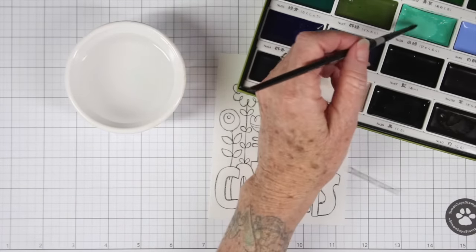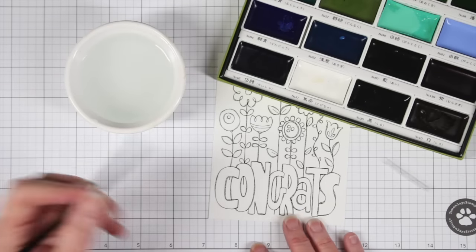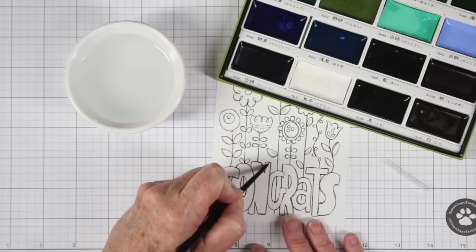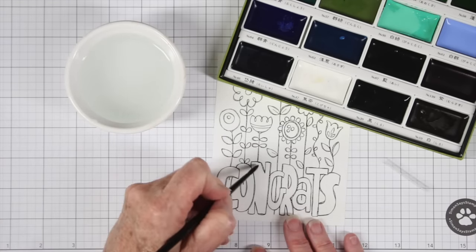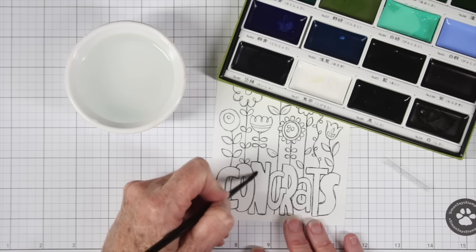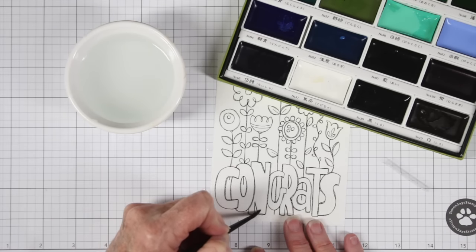The next thing I learned to do is take a clean paintbrush and wet down the area I'm going to be painting. I'm just going to run my paintbrush over this N and make sure I have all the areas wet.